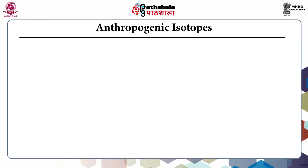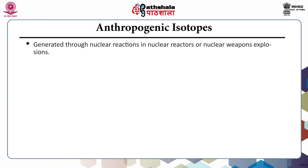Anthropogenic isotopes, as the name indicates, are generated through various activities of man including nuclear reactions in nuclear reactors or nuclear weapon explosions. Some examples are polonium-239, polonium-240, C-14, tritium, iodine-129, and chlorine-36.